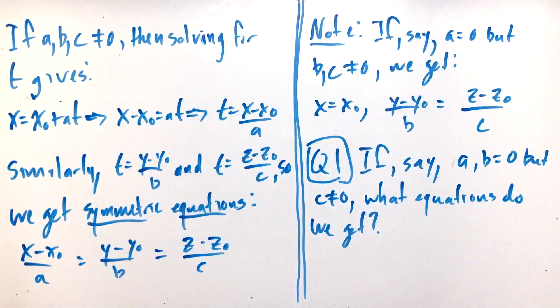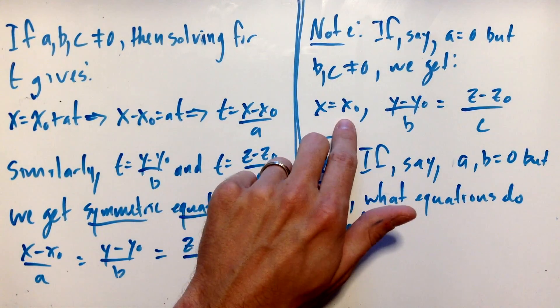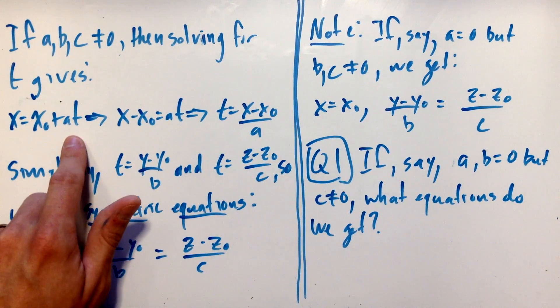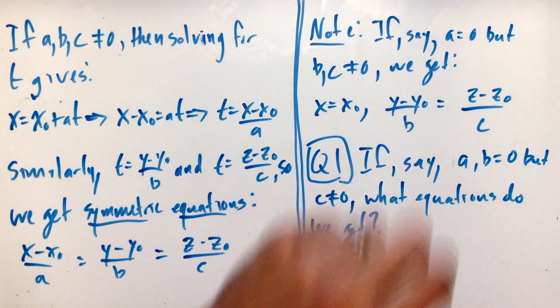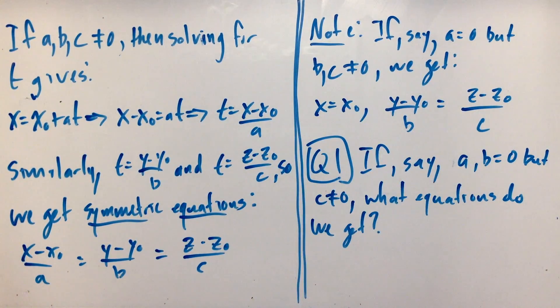Now, if one of these happens to be zero, for example, let's say a is zero but b and c are non-zero, what we get is x = x0—you can't solve for t because it's not there. But the other two, you can still solve for t and you get (y - y0)/b = (z - z0)/c. So it looks a little bit different.